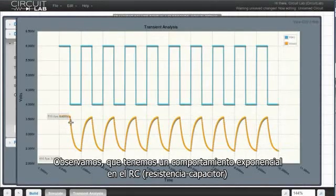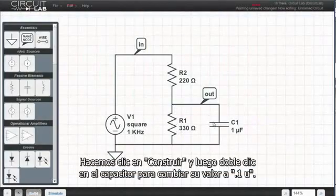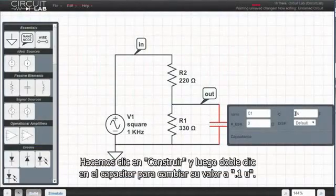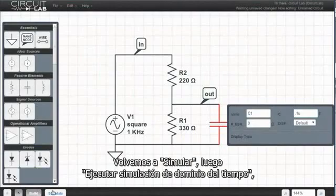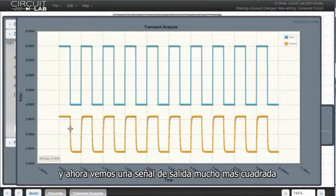Now we get a lot of the exponential RC behavior here, so let's try changing the capacitor size to see what happens. We click build, then double click the capacitor and change it to .1u. Back to simulate, then run time domain simulation.